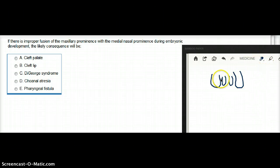So if there is improper fusion of the maxillary prominences with the nasal prominences during embryonic development, the likely consequence will be: cleft lip, cleft palate, DeGeorge syndrome, choanal atresia, or pharyngeal fistula. This is obviously going to be cleft lip,